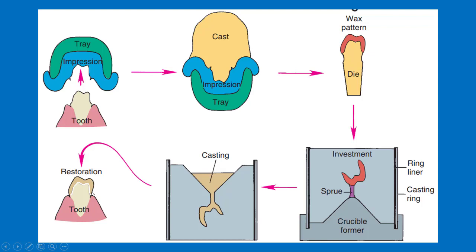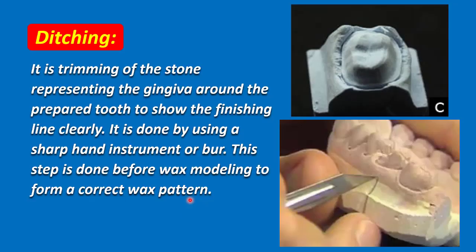This is a case of a full metal crown. Now, before forming the wax pattern, it is important to do ditching. Ditching is the trimming of the stone representing the gingiva around the prepared tooth to show the finishing line clearly. It is done by using a sharp hand instrument or burr.